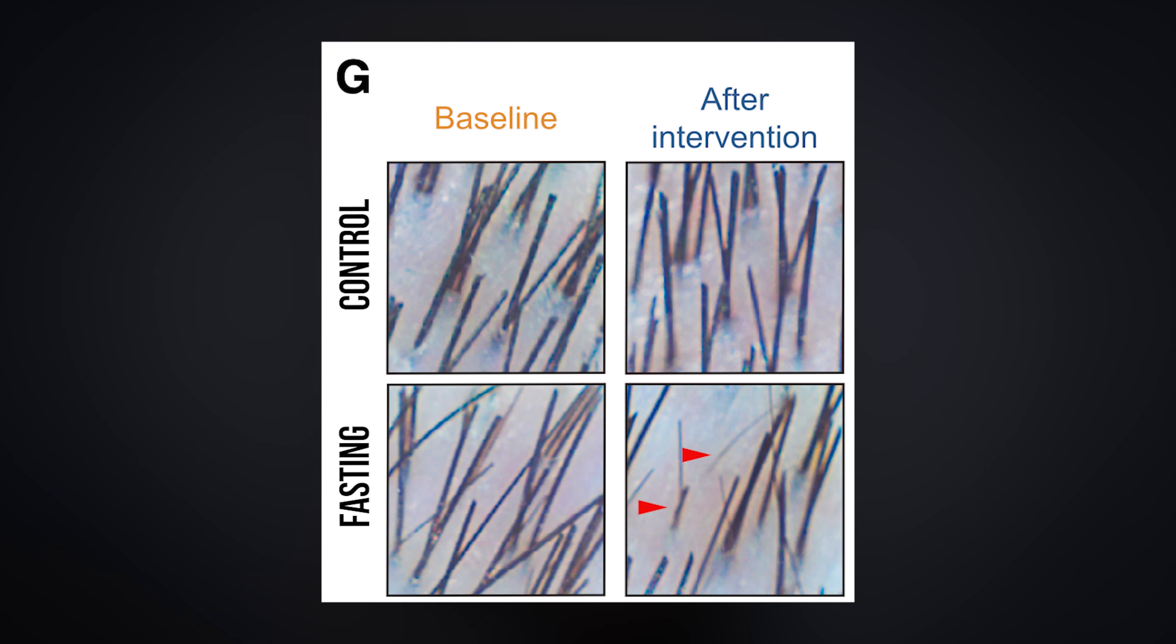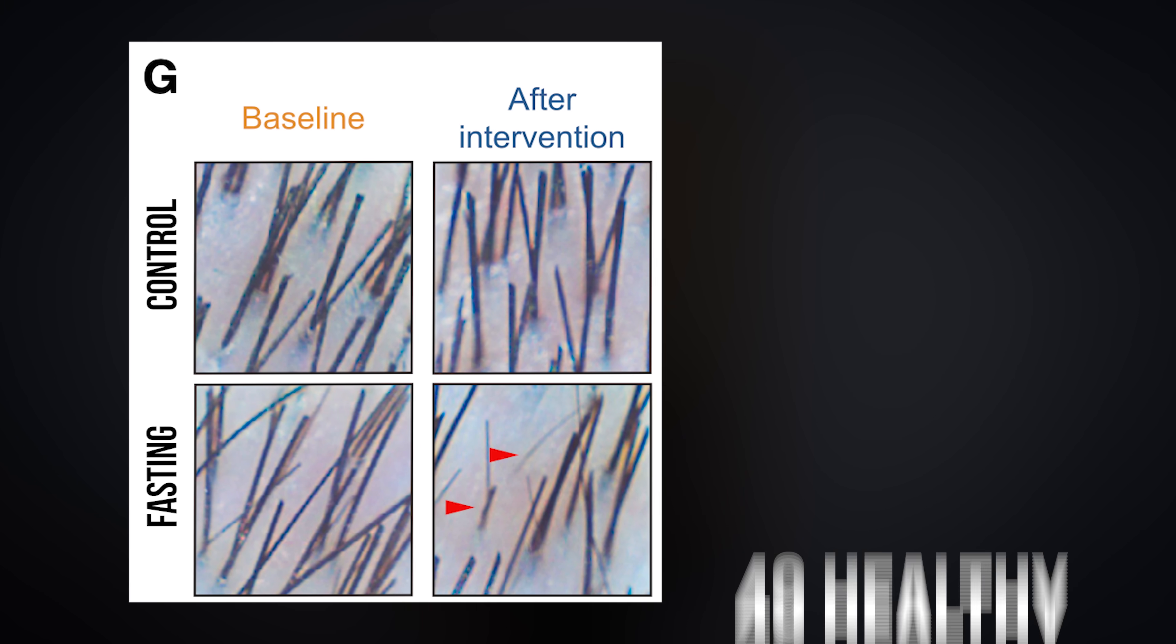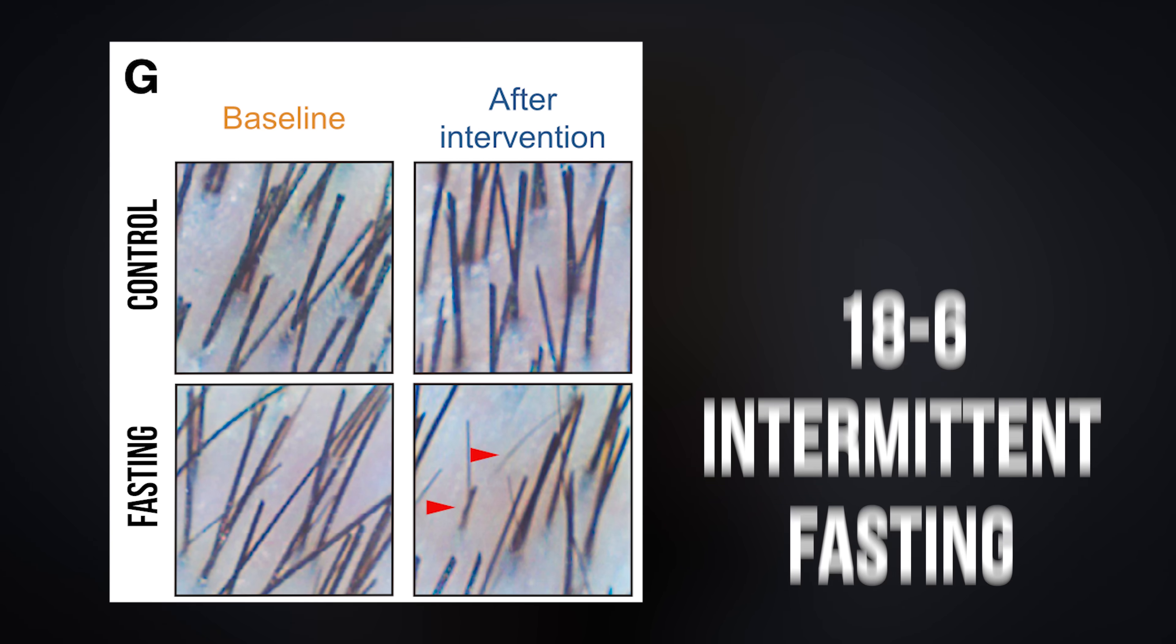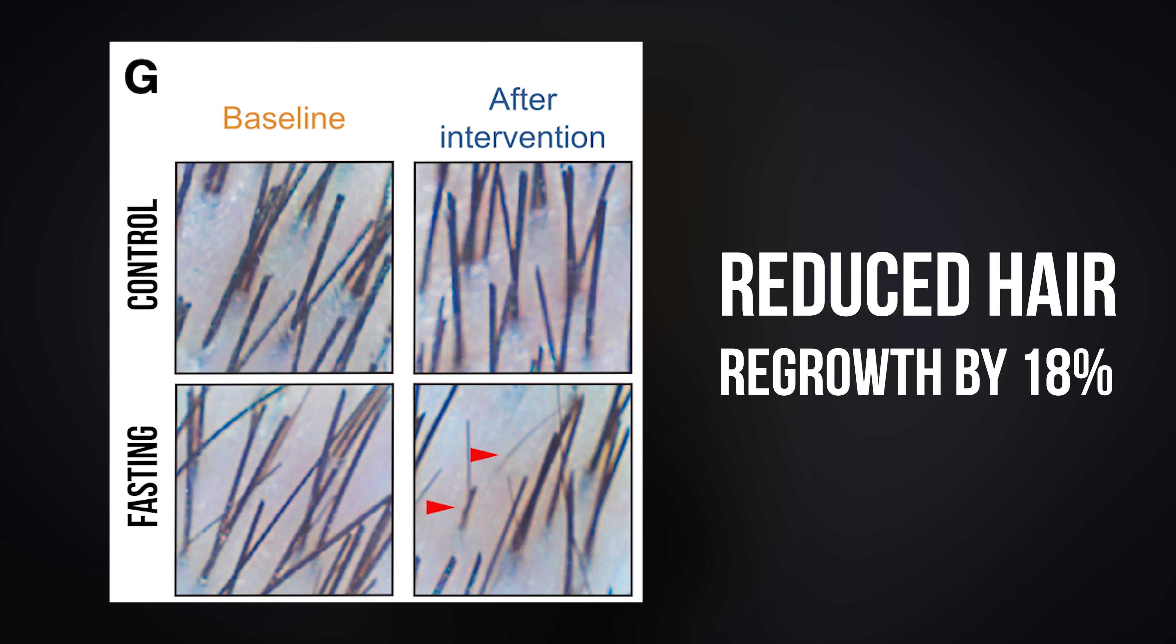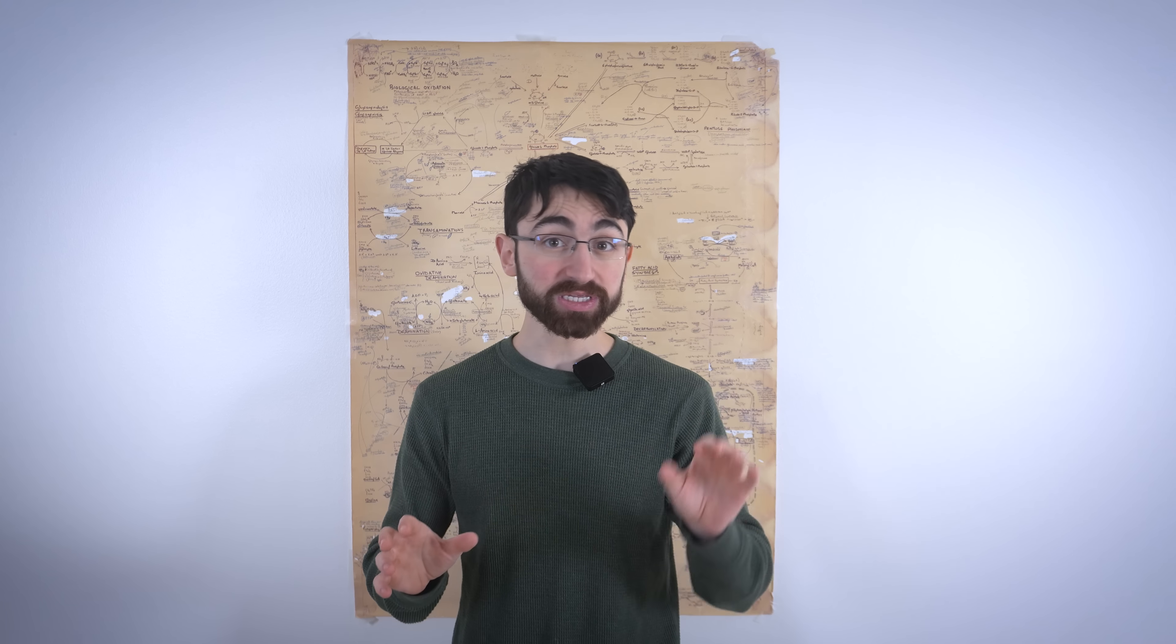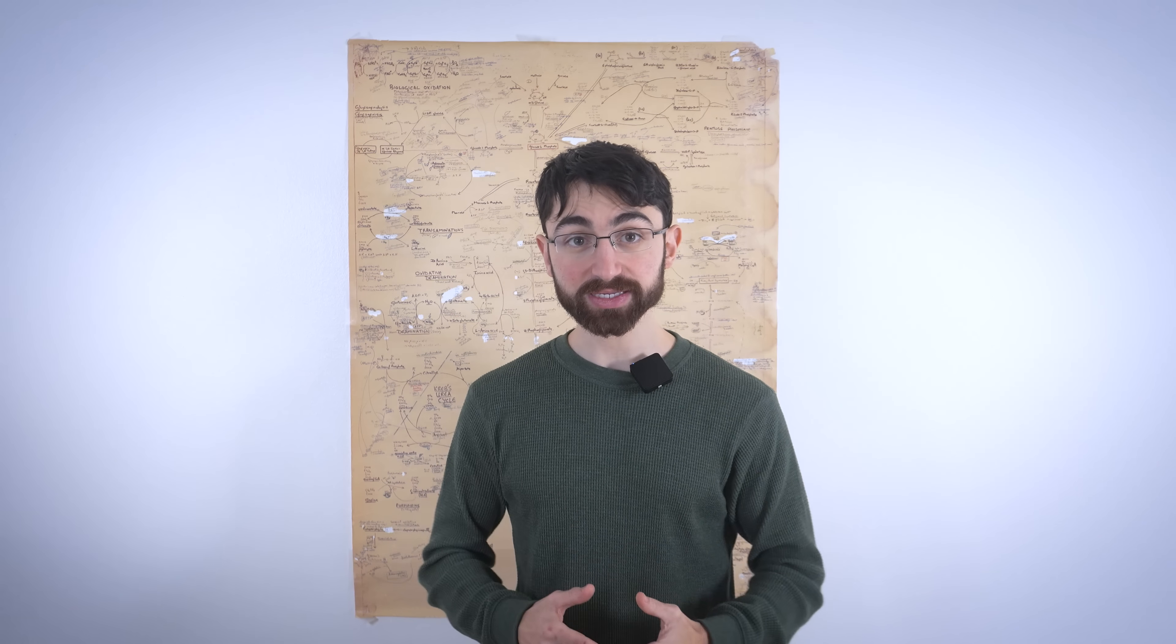Now, I did mention they included human randomized controlled trial data. Indeed, they collected data from 49 healthy individuals subjected to 18-6 intermittent fasting and found it reduced hair regrowth by 18%, in association with other changes that paralleled those seen in their mouse model. So, it appears this mechanism does generalize to humans.